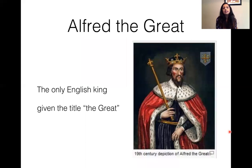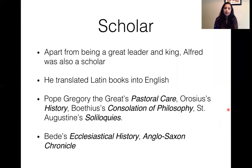Alfred the Great is the only English king to be given the title 'the Great.' He was not just a great leader and king, but he also translated many Latin books into English — including Pope Gregory the Great's Pastoral Care, Orosius' History, Boethius' Consolation of Philosophy, St. Augustine's Soliloquies, Bede's Ecclesiastical History, and the Anglo-Saxon Chronicle.